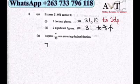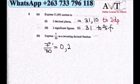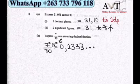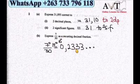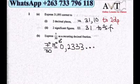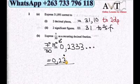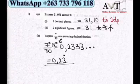Question 2b: Express 13 over 30 as a recurring decimal. Dividing 13 by 30: 13 divided by 30 gives 0.2, with remainders cycling. Continuing the division, 13 divided by 30 gives 0.433... The recurring digit is 3, so we express it as 0.2̄3̄ with a dot over 3 to show it is recurring.